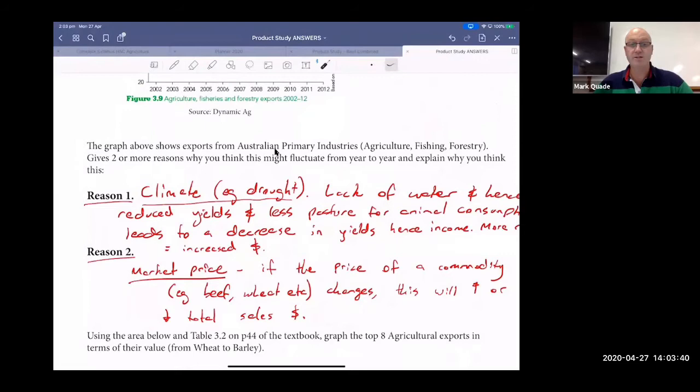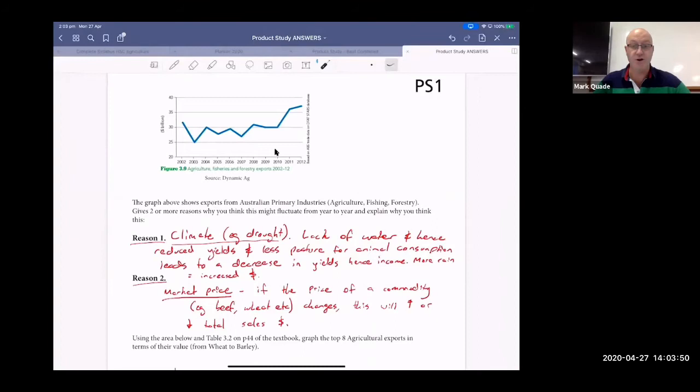Give two or more reasons why I think this might fluctuate from year to year and explain why you think this is. Reason one would be climatic conditions: drought, lack of water, lack of produce. Reason two, increased dollars, so market price. If a commodity like beef or wheat changes, this will increase or decrease the amount of sales. So if there's not much money in wheat, no one plants it, so you don't have the exports for it. We have fluctuations from climate and then we have markets.